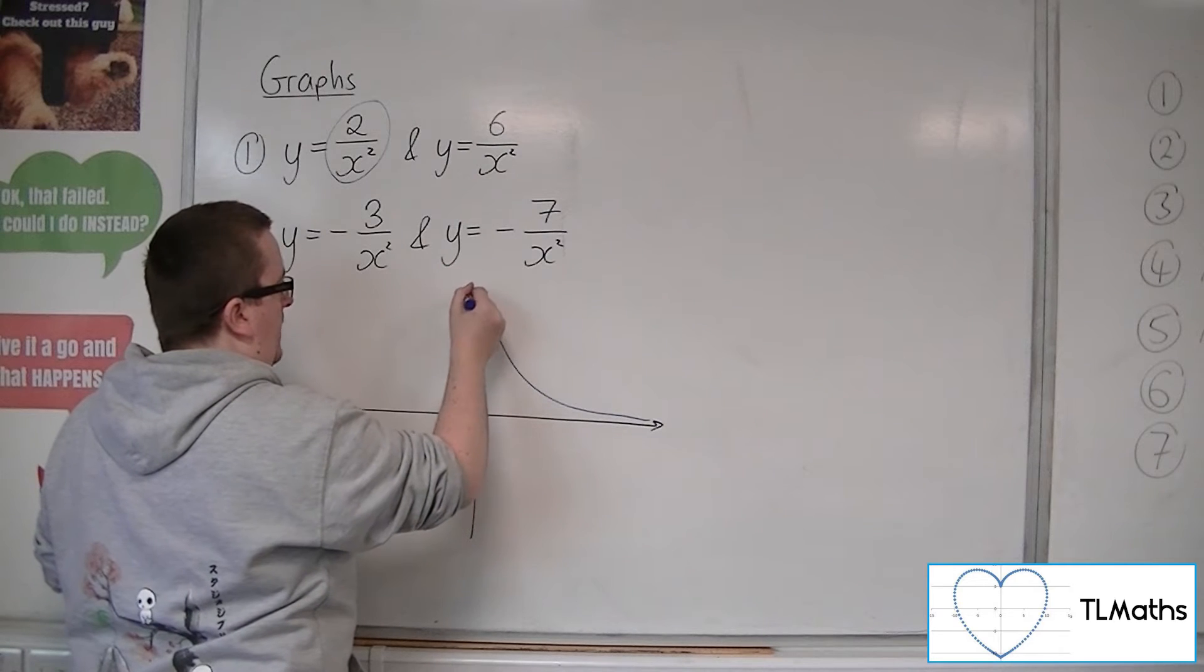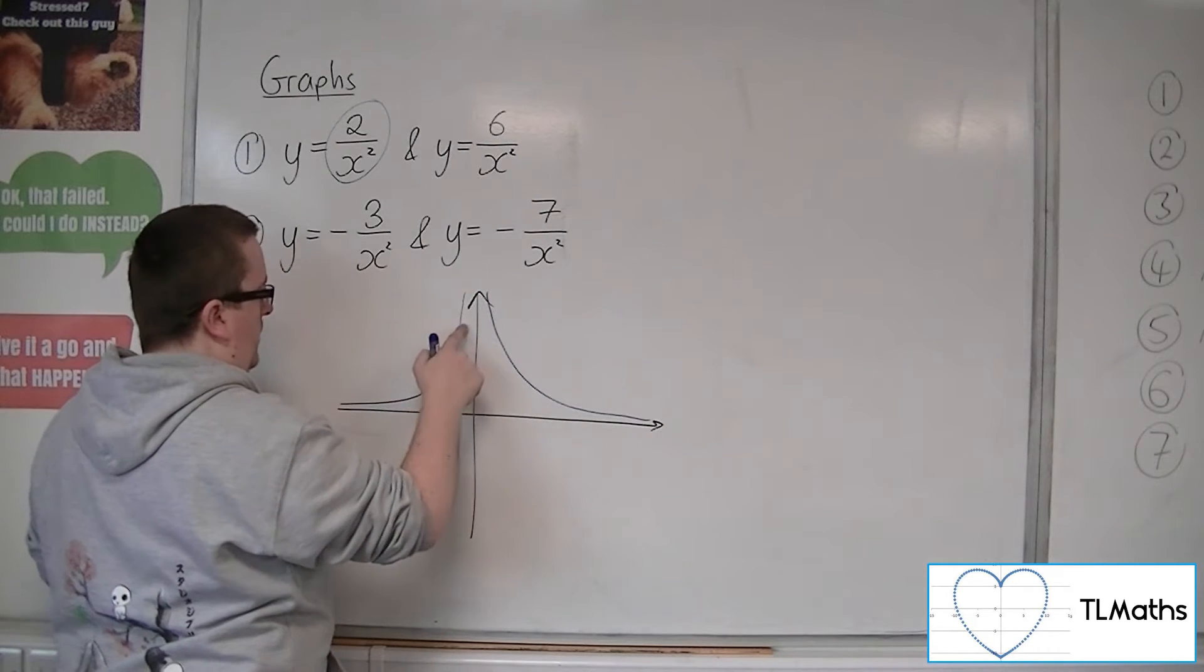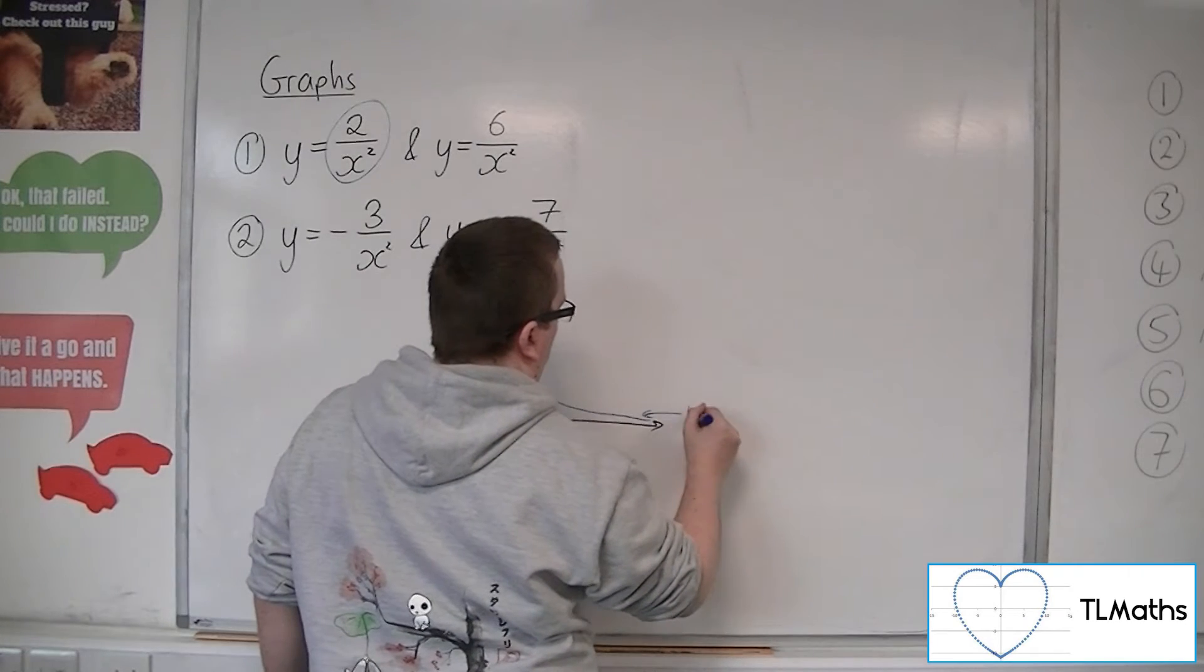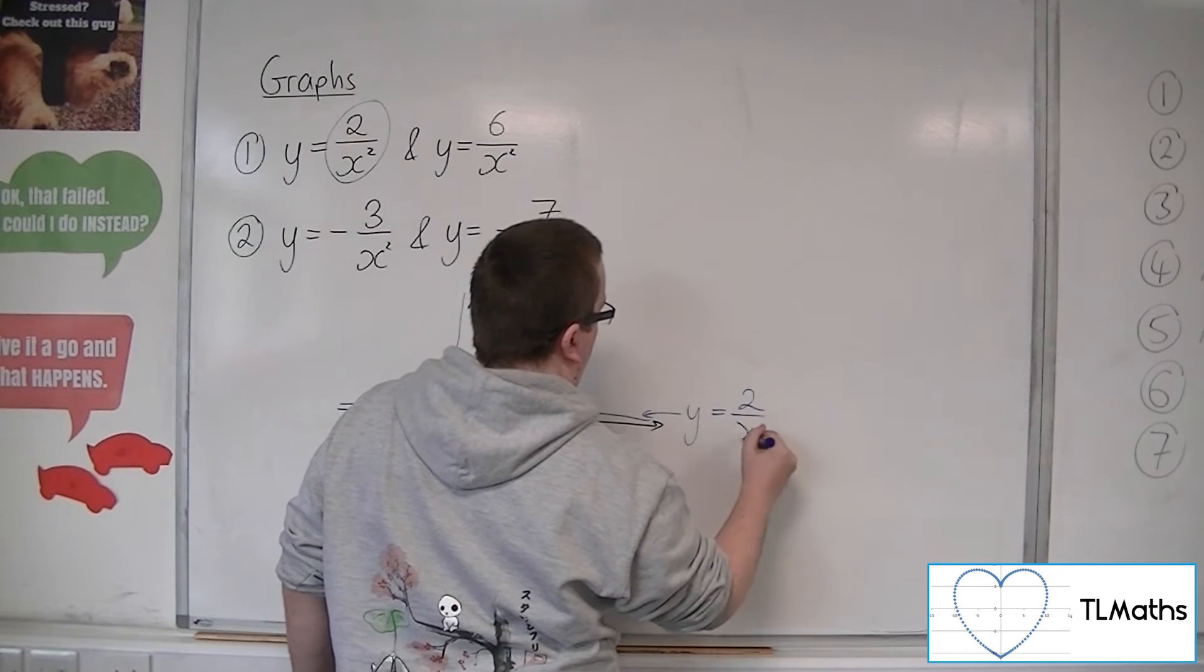Let's be a little bit careful with the graph. So something like that. So this would be y equals 2 over x squared.